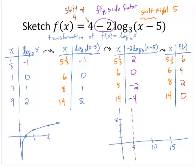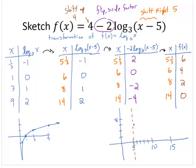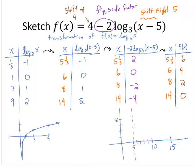So 5, let's see here, 6, 7, 8, 9, 10. All right, so 5 and 1/3, I have the ordered pair 5 and 1/3, 6. That's about here. I have the ordered pair 6, 4. I have the ordered pair 8, 2. And I have the ordered pair 14, 0.